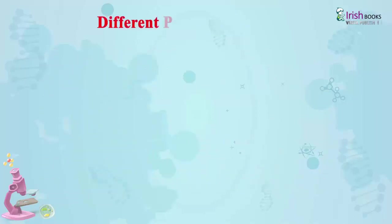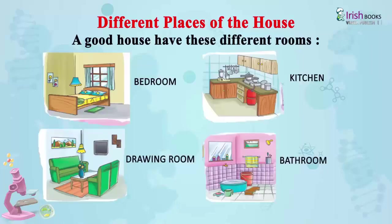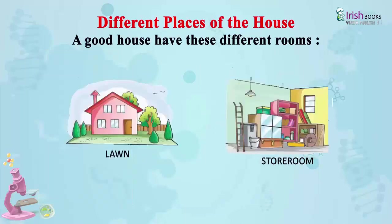Different places of the house. A good house has these different rooms: bedroom, drawing room, kitchen, bathroom, toilet, dining room, study room, balcony, lawn and storeroom.